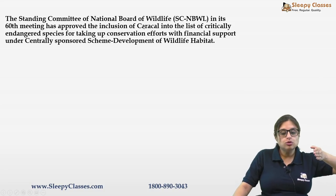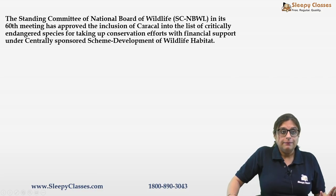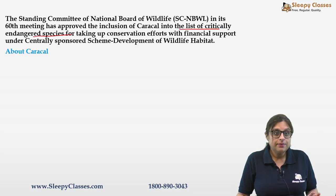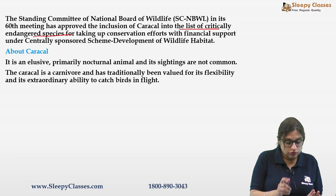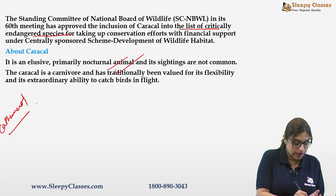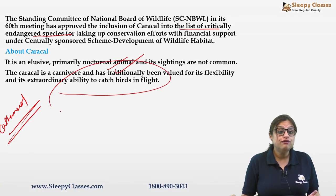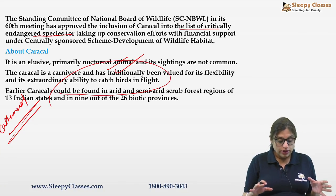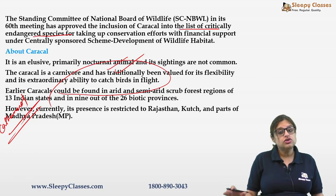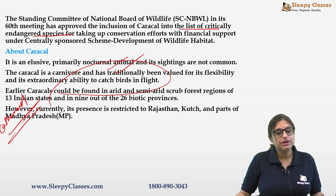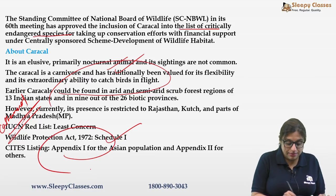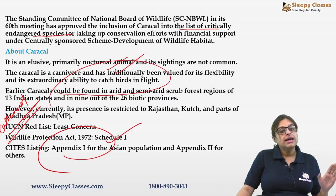Karakal is primarily active during the night, but the term cathemeral is used because it can also be active during the day. It can even catch birds in flight. It is found in arid and semi-arid regions. Previously found in 13 Indian states, it is now restricted to Rajasthan, Kach, and parts of Madhya Pradesh. IUCN status: least concern; Schedule 1 of Wildlife Protection Act; CITES Appendix 1 for Asian population, Appendix 2 for others — as its numbers in Asia have reduced significantly.